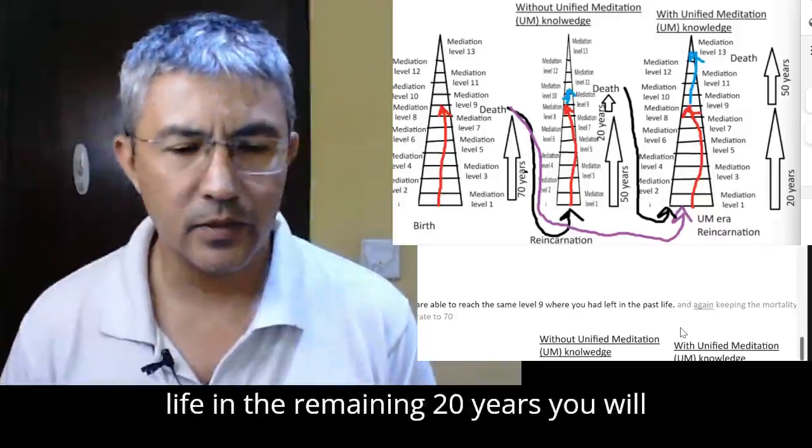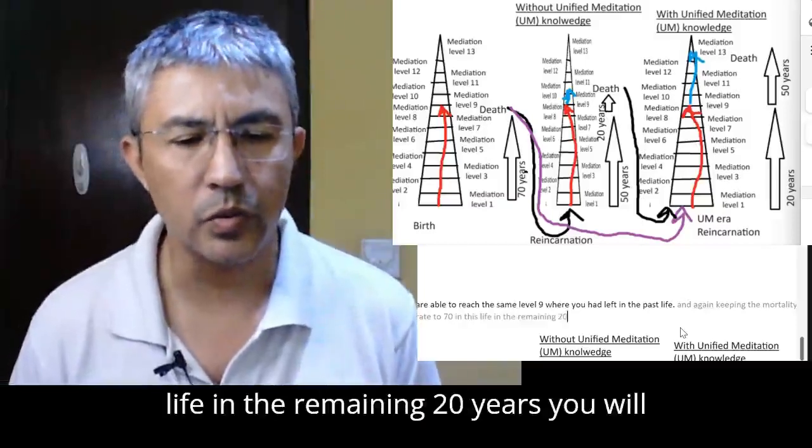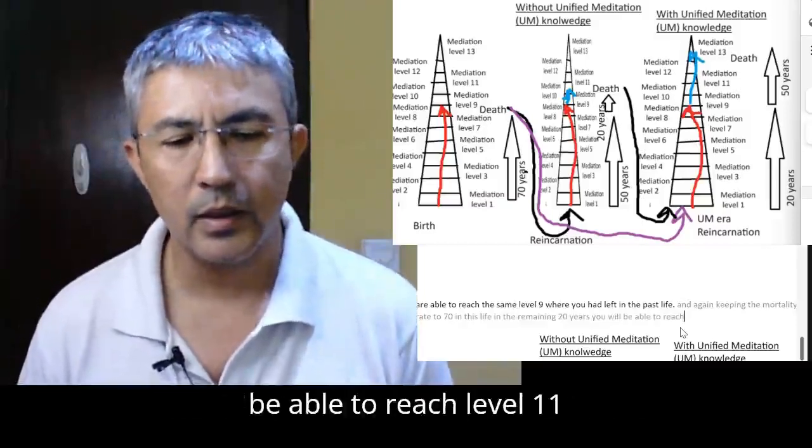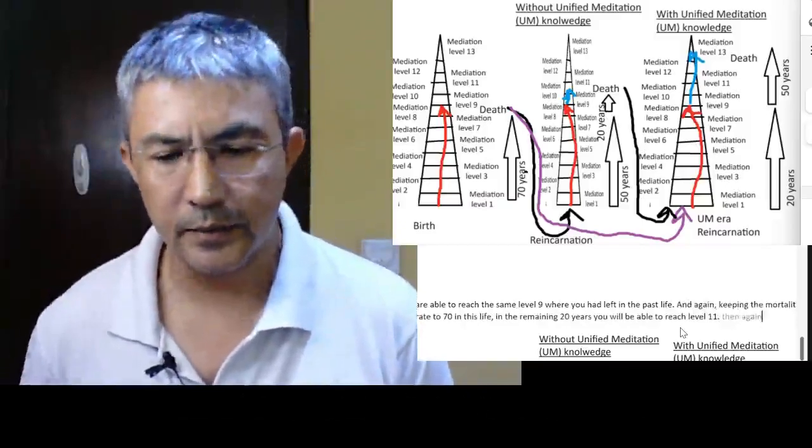And again, keeping the mortality rate to 70. In this life, in the remaining 20 years, you will be able to reach level 11. Then again, you die.